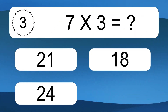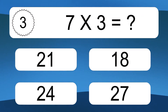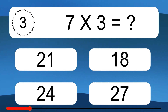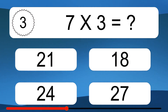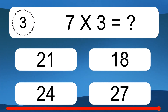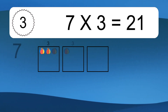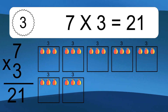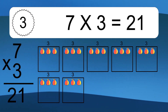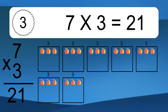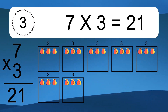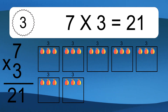7 times 3 equals what? 7 times 3 equals 21. We have 7 boxes, and each box has 3 colorful balls inside. If you count all the balls in all the boxes together, you will have 7 times 3 balls. This equals 21 balls.